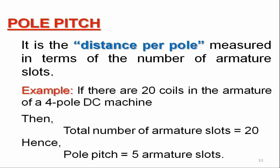As we already know, the armature core has a number of slots on its outer periphery so as to place the conductors of the armature coils. We will make use of the number of armature slots for defining these basic terms. The first term is pole pitch, which is referred to as the distance per pole measured in terms of the number of armature slots.